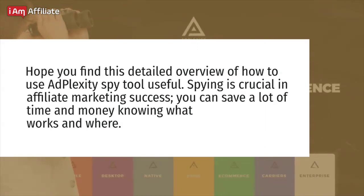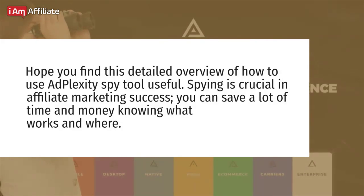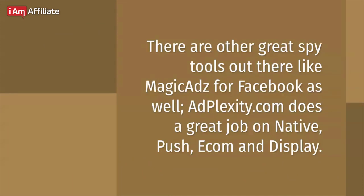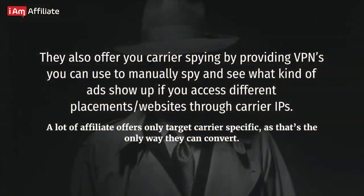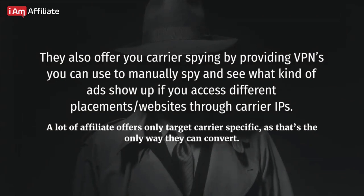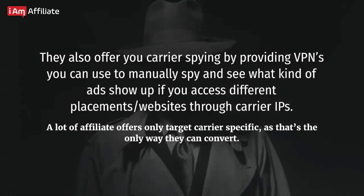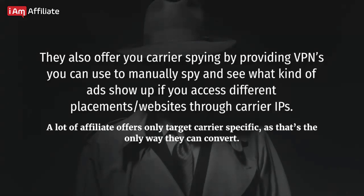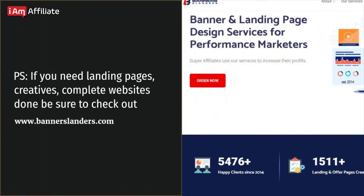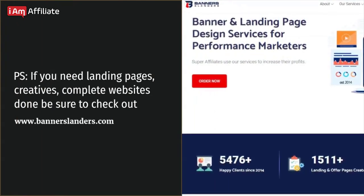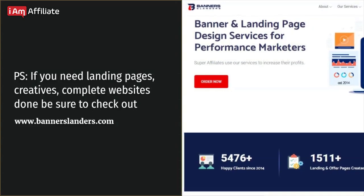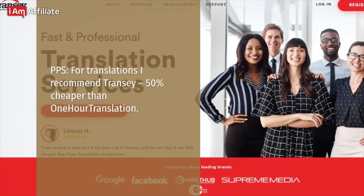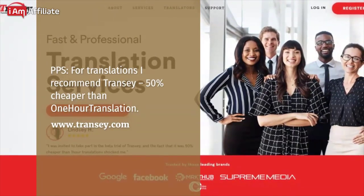I hope you find this detailed overview of how to use AdPlexity useful. Spying is crucial to affiliate marketing success — you can save a lot of time and money knowing what works and where. There are other great spy tools out there like MagicAds for Facebook. AdPlexity.com does a great job on native, push, ecom, and display. They also offer carrier spying via a VPN you can use to manually see what ads show up when accessing placements through a carrier IP. If you need landing pages, creatives, or complete websites, check out www.bannerslenders.com. For translations, I recommend TransEye — 50% cheaper than One Hour Translation.